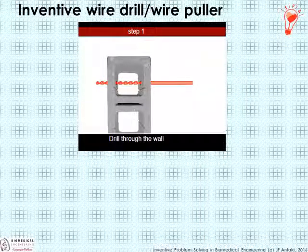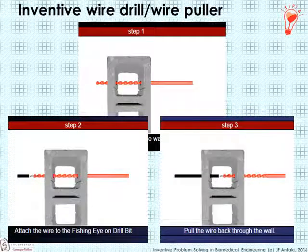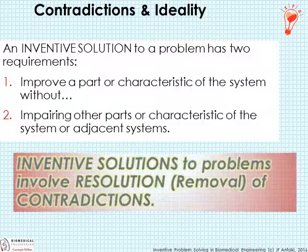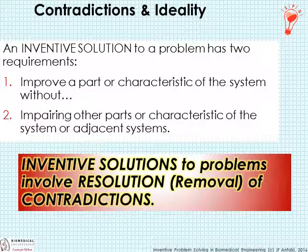Here's another clever invention: a drill used for passing wires through cinder block. The drill has a hole in the end, or an eyelet, that accepts the wire you're trying to fish through, and serves a dual function of being both the drill and the fish tape — a very clever combination of functions that solves a contradiction, and yet another invention. Please remember: an inventive solution has two requirements — improving one part or characteristic of a system without impairing the other parts or characteristics of the system. In other words, inventive solutions involve resolution or removal of contradictions.